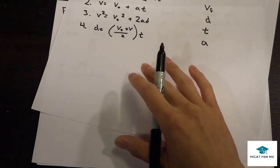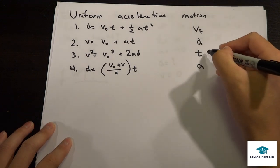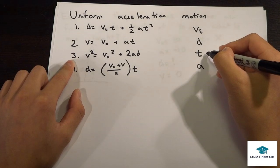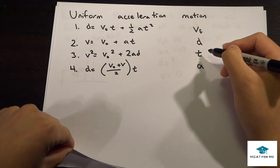Since t is what we don't know and we don't worry about it, we use this equation right here. So v squared equals v naught squared plus 2ad.